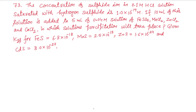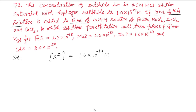The question is: the concentration of sulfide ions in 0.1 molar HCl solution that is saturated with hydrogen sulfide is given. Sulfide ion concentration is 1.0 × 10⁻¹⁹ molar. Now, 10 ml of this solution is added to 5 ml of 0.04 molar solutions of ferrous sulfate, MnCl₂ (manganese dichloride), ZnCl₂ (zinc dichloride), and CaCl₂ (calcium chloride). In which solutions will precipitation take place?